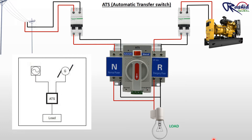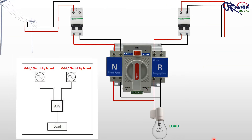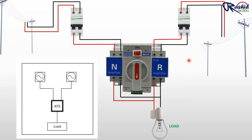In this option the primary source is connected to the electricity board and secondary source is connected to generator. On the second option, both primary and secondary source are connected to grid or electricity board. These two sources could be independent of each other, requiring the provision of two electric services by the public utility provider, or they could come from a single electric service that is distributed via redundant pathways inside the facility.